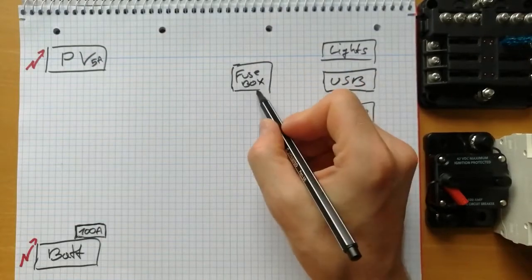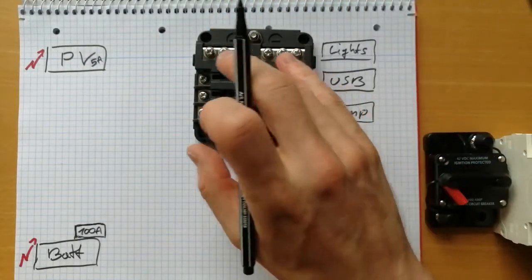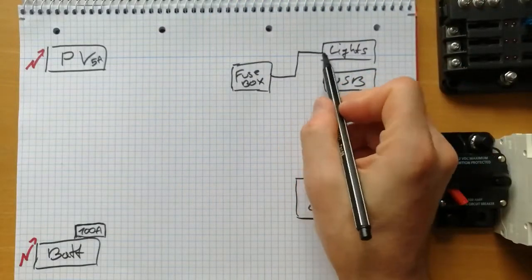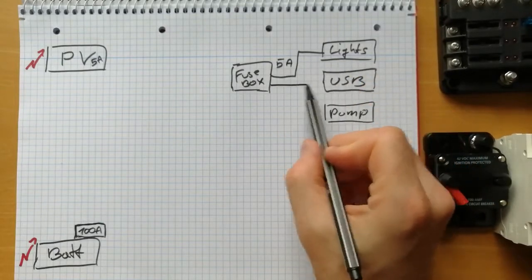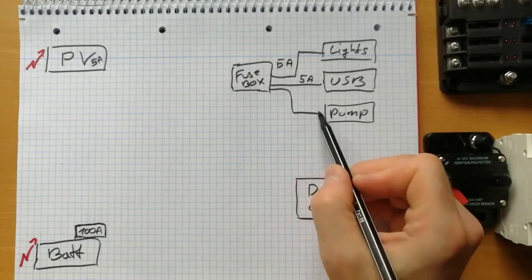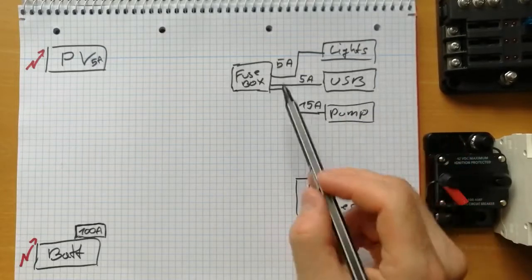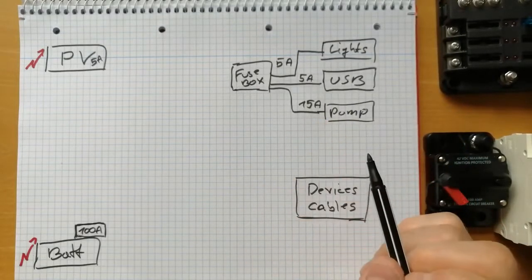So I want to put this fuse box here, and then have different connections for my lights. For example, I can have a 5 amp fuse, also 5 amps here. And to my pump, maybe a 15 amp fuse so that all my devices and also cables are protected on this side.